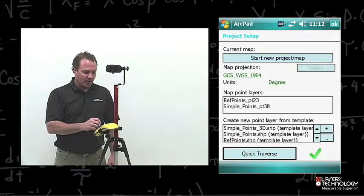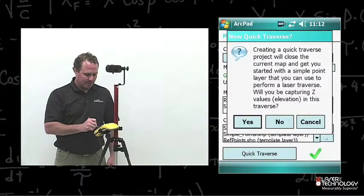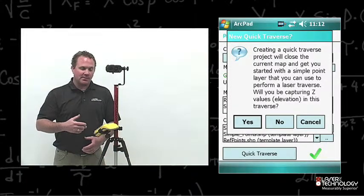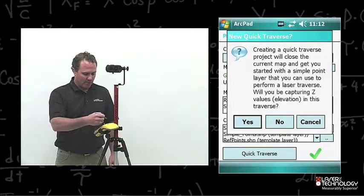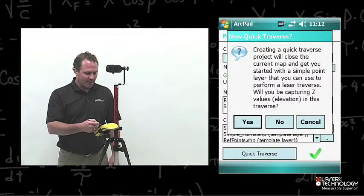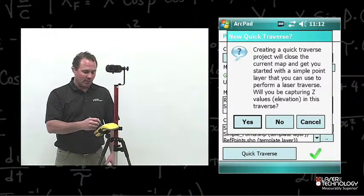In Project Setup, we want to go ahead and do a quick traverse. This actually closes our last map. It's going to start us off with a new map with a simple points layer activated. We can also capture our z-value elevation at this time. Before this demonstration, I'm going to go ahead and choose No.